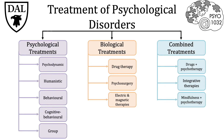Treatments for psychological disorders can be broken down into three broad categories. The first is psychological treatments, including various approaches like psychodynamic, humanistic, behavioral, cognitive behavioral, and group therapy, which we'll discuss today.